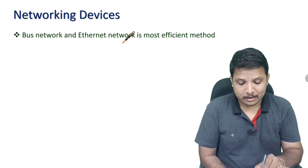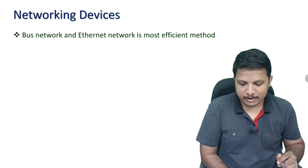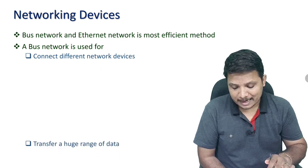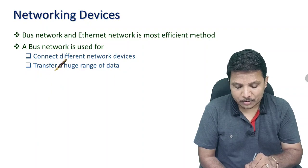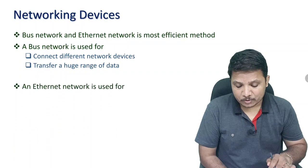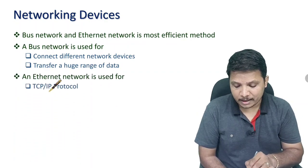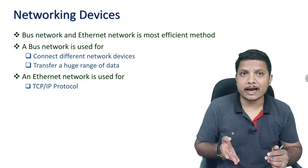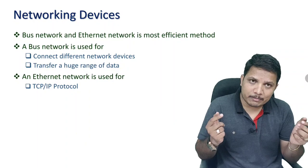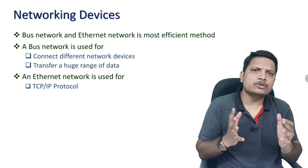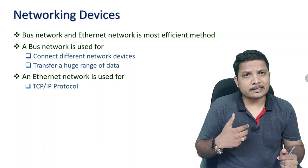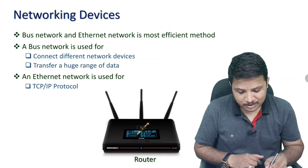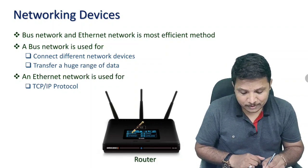Now let us look at networking devices. We have bus network and Ethernet network as the most commonly used networking devices. Bus networks are used to connect devices in a network with a huge range of data transfer and their own defined protocol. In an Ethernet network, we use the TCP/IP protocol. A router is used for the Ethernet network.